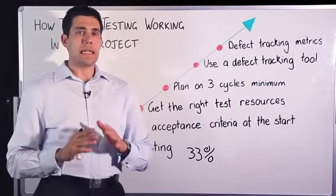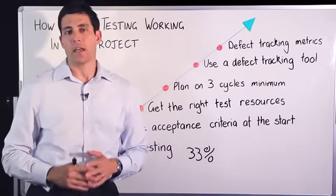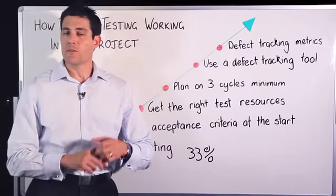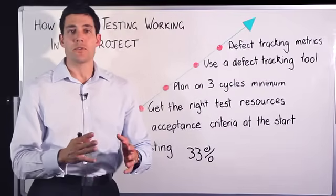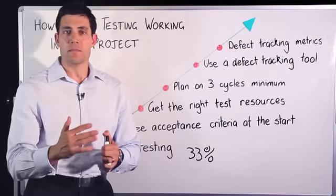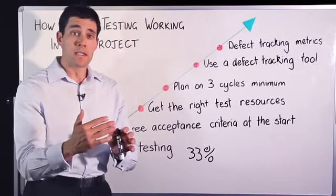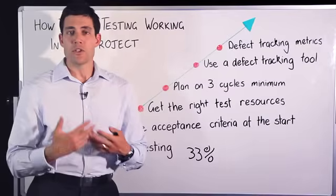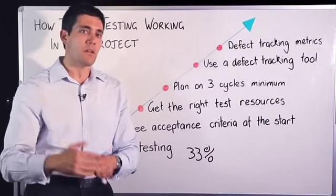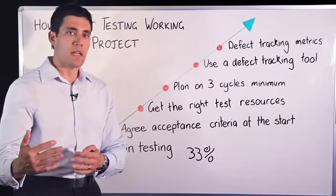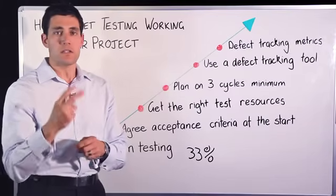Next, always allow for at least three cycles of testing on your project. You've got your own unit testing if you're doing software development that your developers do. But beyond that, they've got systems testing, which is one cycle of testing. Next one would be integration testing. So that's a separate activity. And once again, another set of testing outside of system testing. So that's your second cycle.